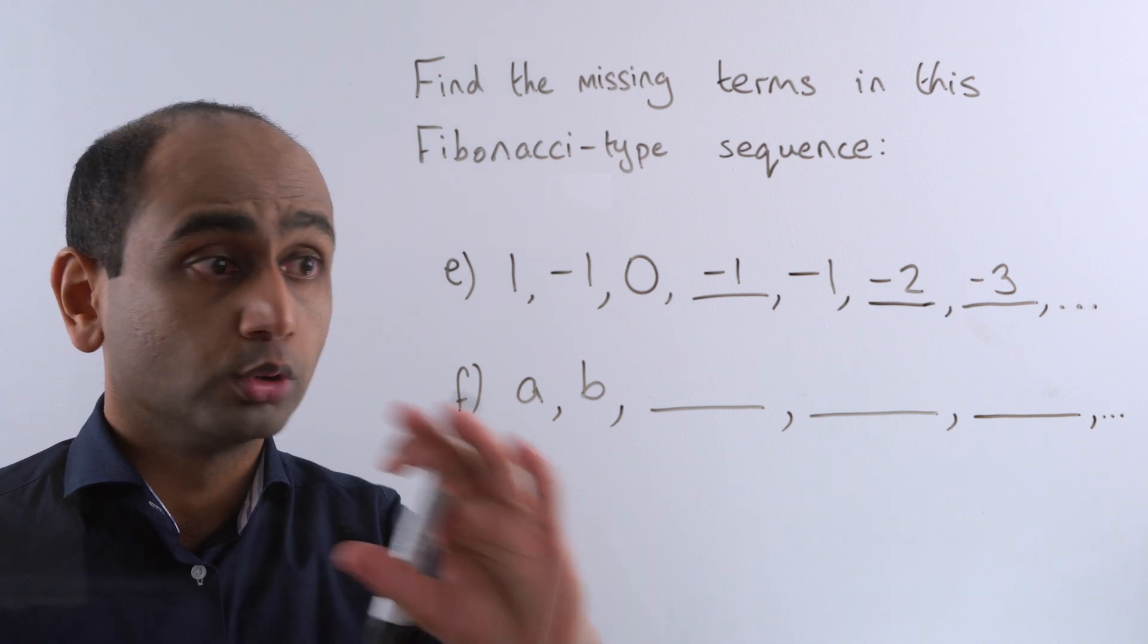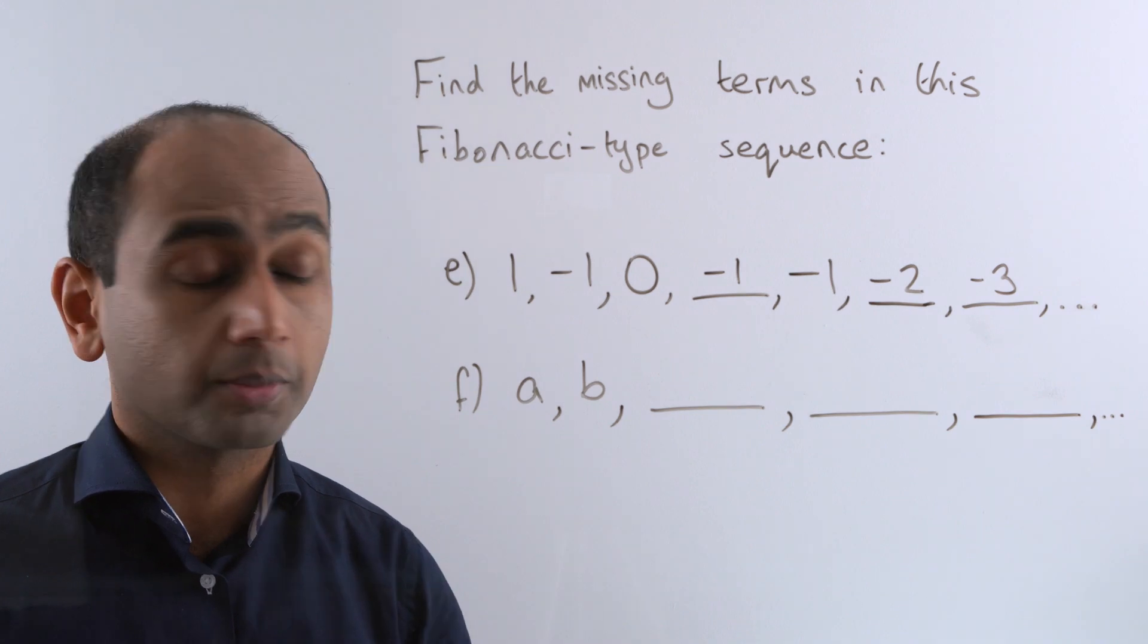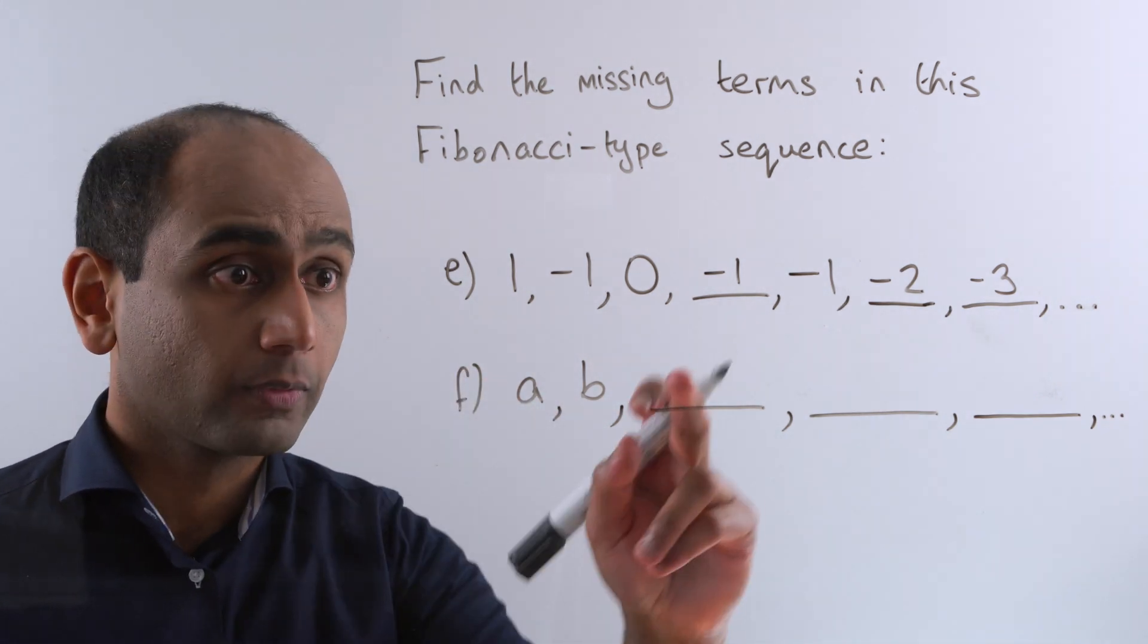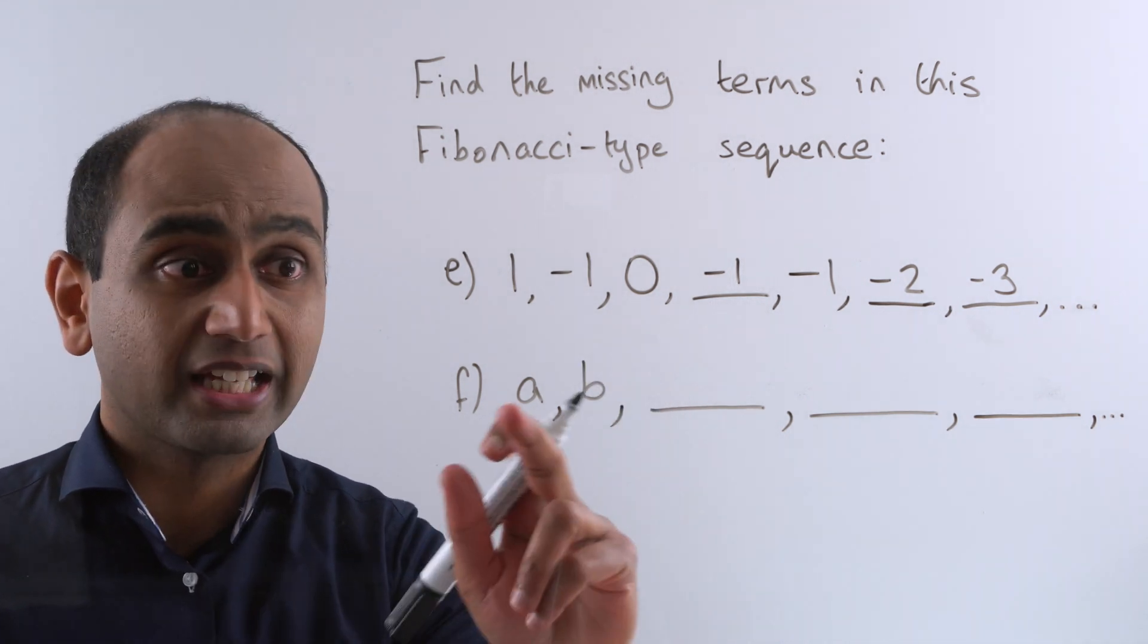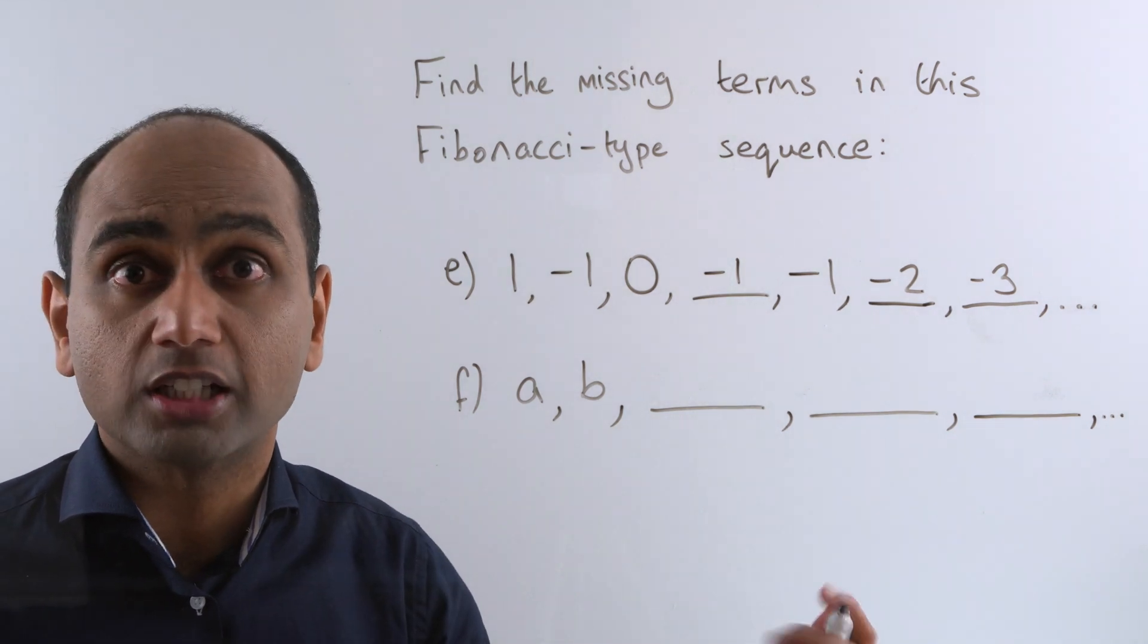Here's the last example. Pause the video and have a go at this one. Here's the answer. Now we follow exactly the same steps as we've been following so far. That term is found simply by adding the previous two together. So what's A plus B? Well it's just A plus B.